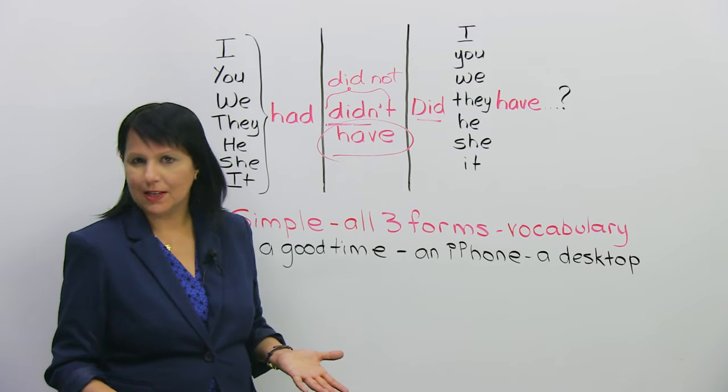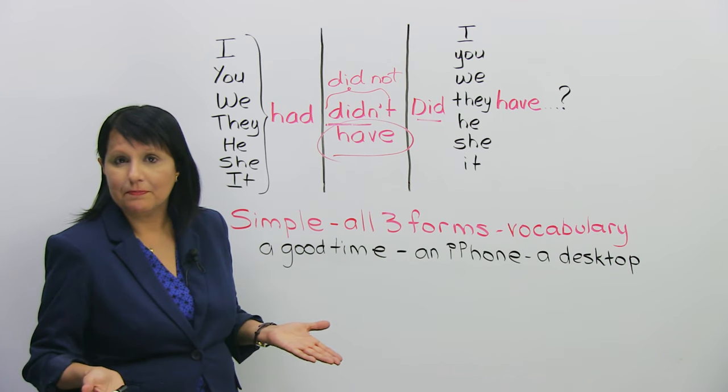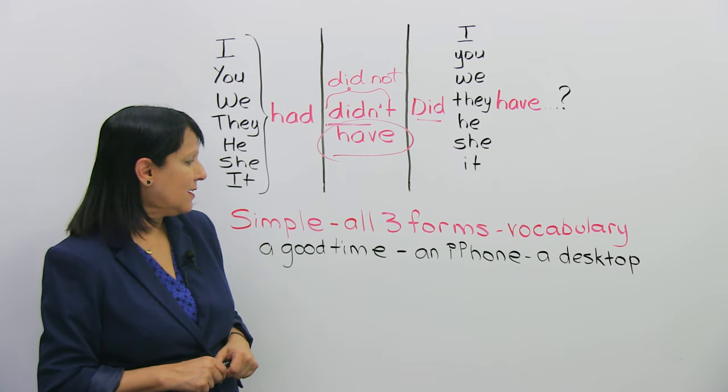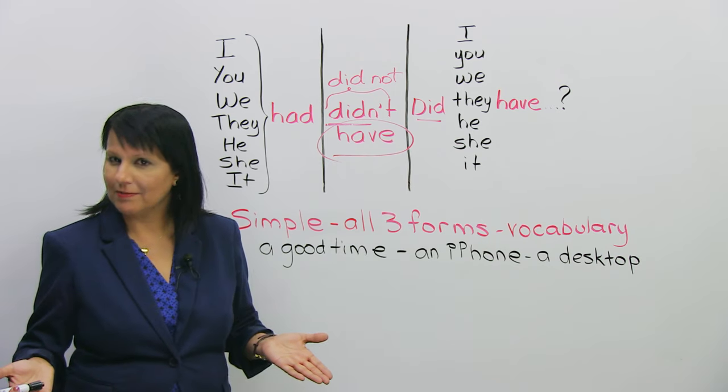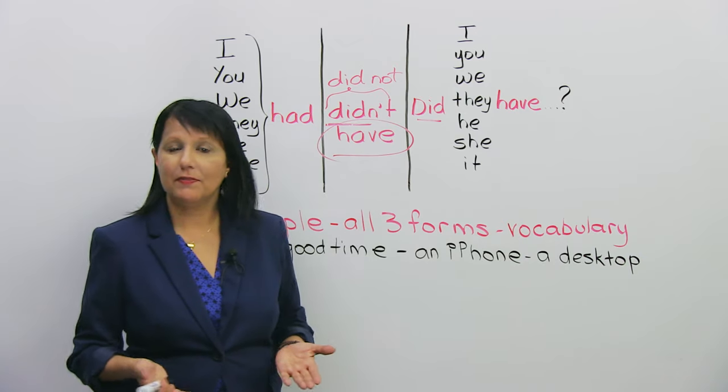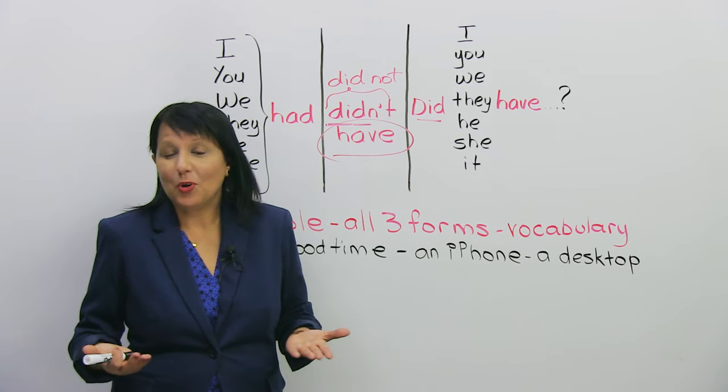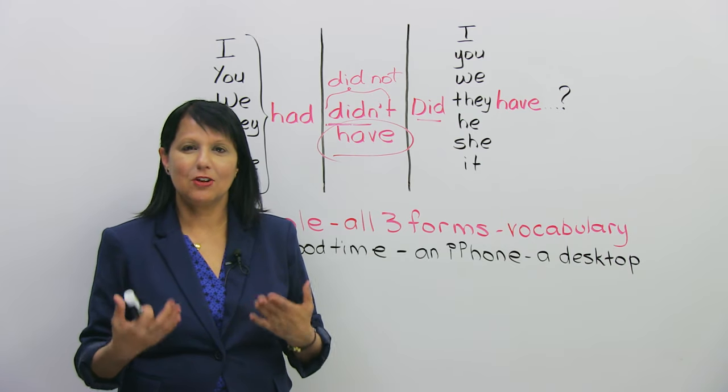So, when you're making your own examples, you could say something like, I had a good time. Okay? At the party last night. Or, I had an iPhone, now I have an Android. Or, I had a desktop, now I have a laptop. Okay? I don't know. Whatever is about your life. Okay? Make some examples that talk about you, and what you had, and what you didn't have.